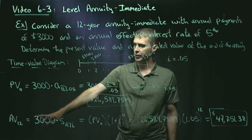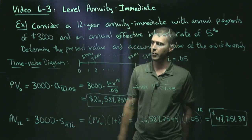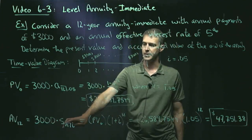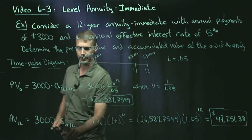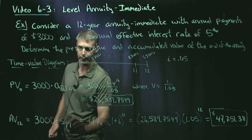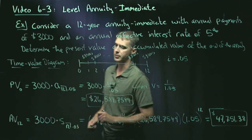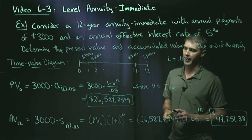First, though, the notation. The accumulated value at time 12, the end of the annuity, would be 3,000 times S angle 12. If I correct this, the notation would be 12 payments and a 5% interest rate. So 12 angle 0.05.